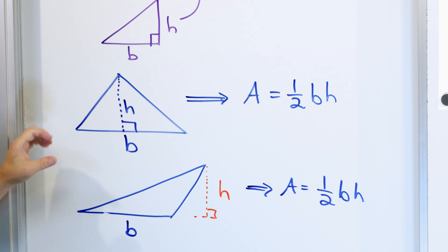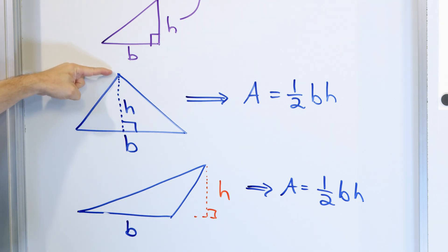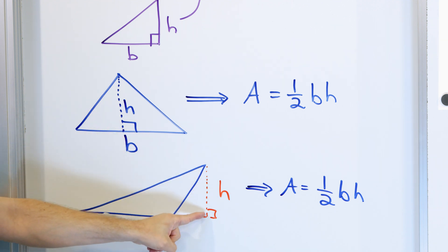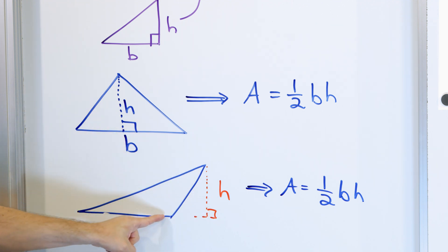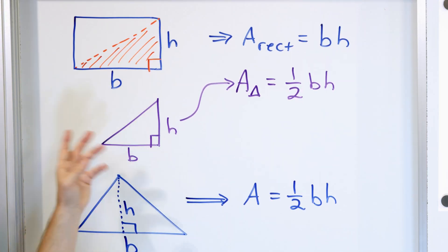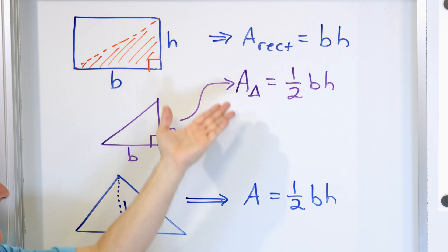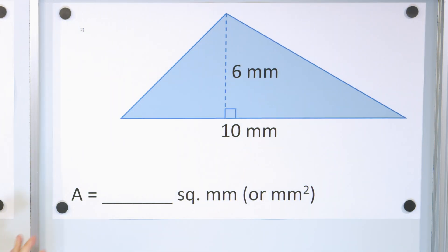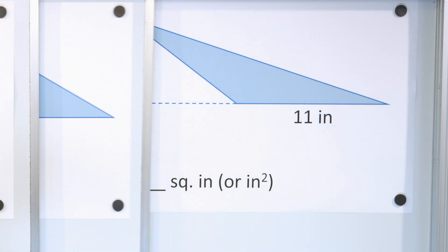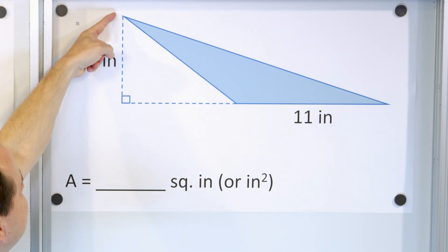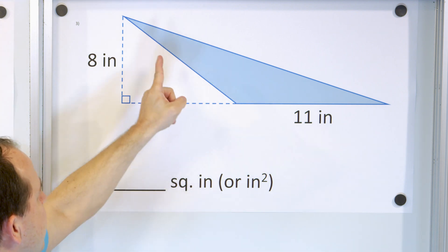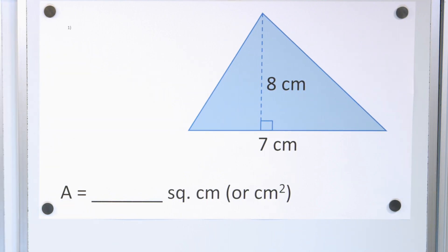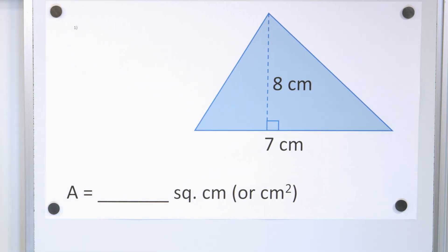One-half times base times height — it's just that when you have a standard triangle you measure the height from the top all the way down to the base. When you have a slanted triangle, you measure the height from the top straight down, level with the base. And of course for a right triangle we measure it the same way. So exactly the same equation in all three cases. We're going to solve problems involving all three of these types. The height is always measured from the top all the way down to the base, and we're finding the area of the shaded region.